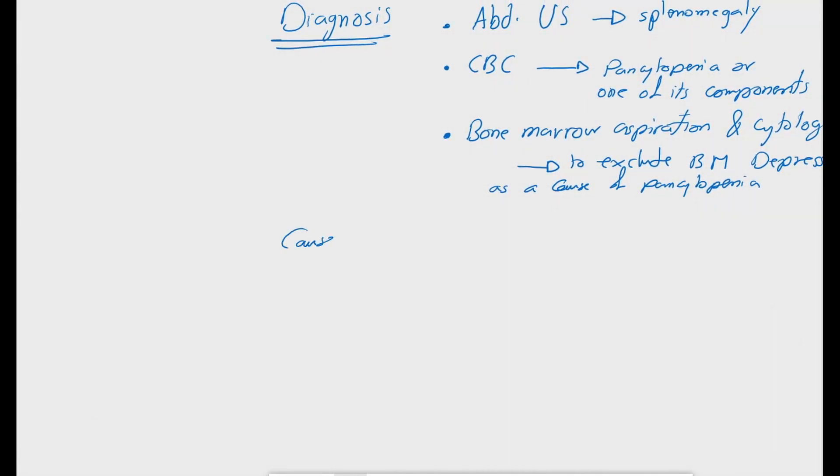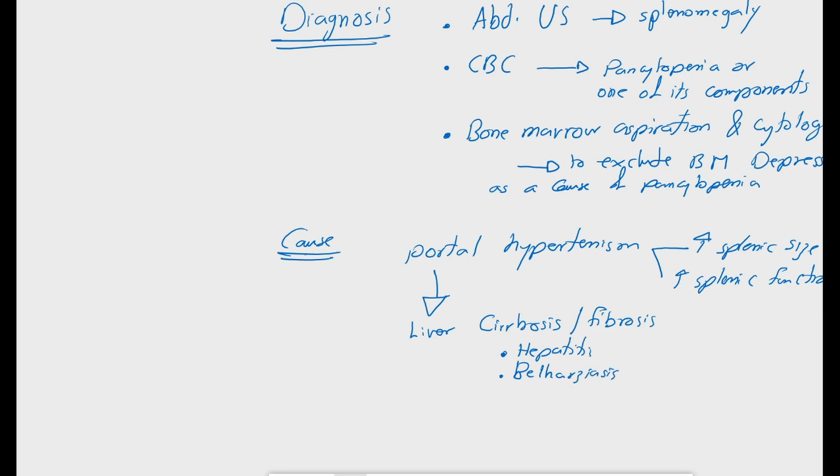A main cause of hypersplenism is portal hypertension which in turn leads to increasing the splenic size and function such as in cases of liver cirrhosis or fibrosis due to chronic hepatitis, bilharziasis or long-term alcohol abuse.